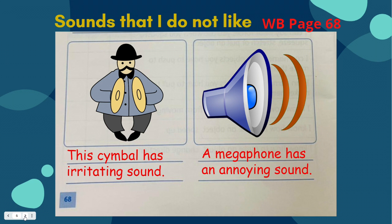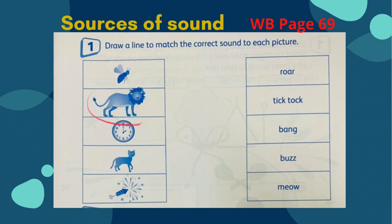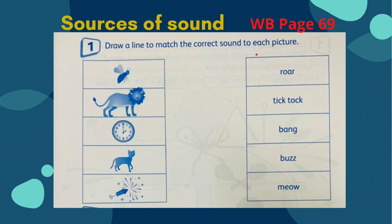You are under a risk. In your workbook, page 69, number 1, draw a line to match the correct sound to each picture. So these are different pictures: a bee, lion, clock, cat, firework. Now, in this column are the different sources of sound. It can be natural or man-made.